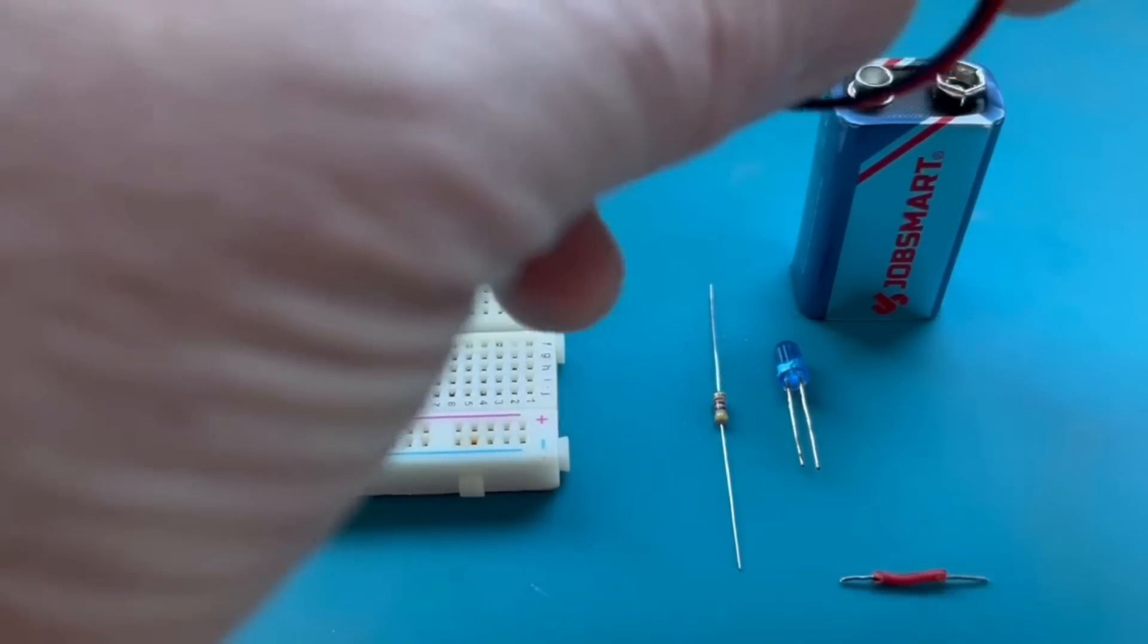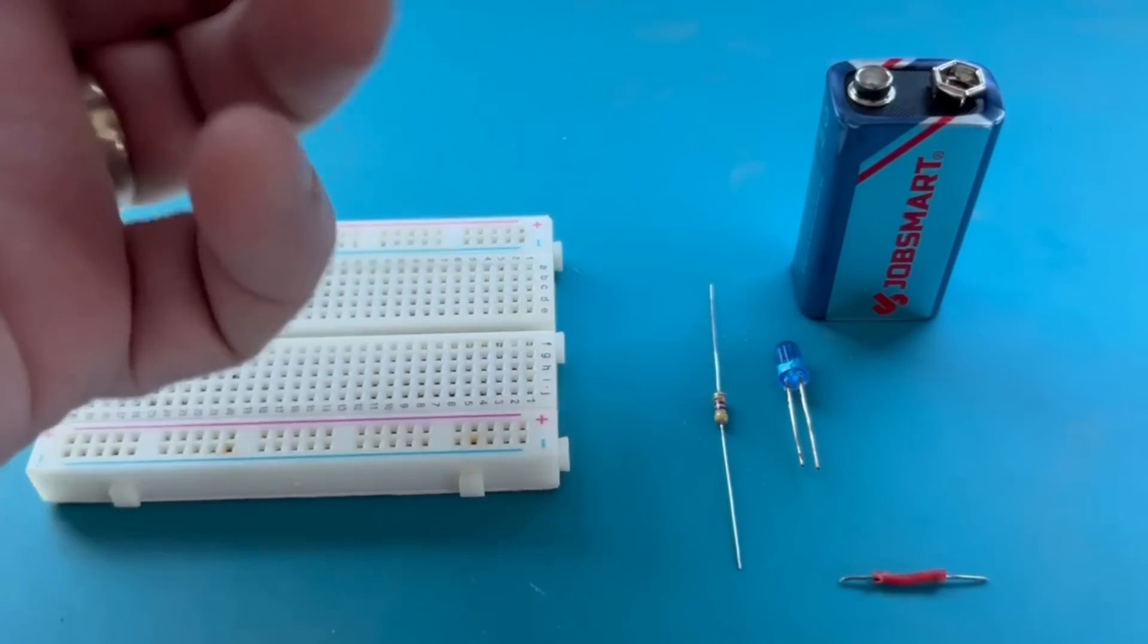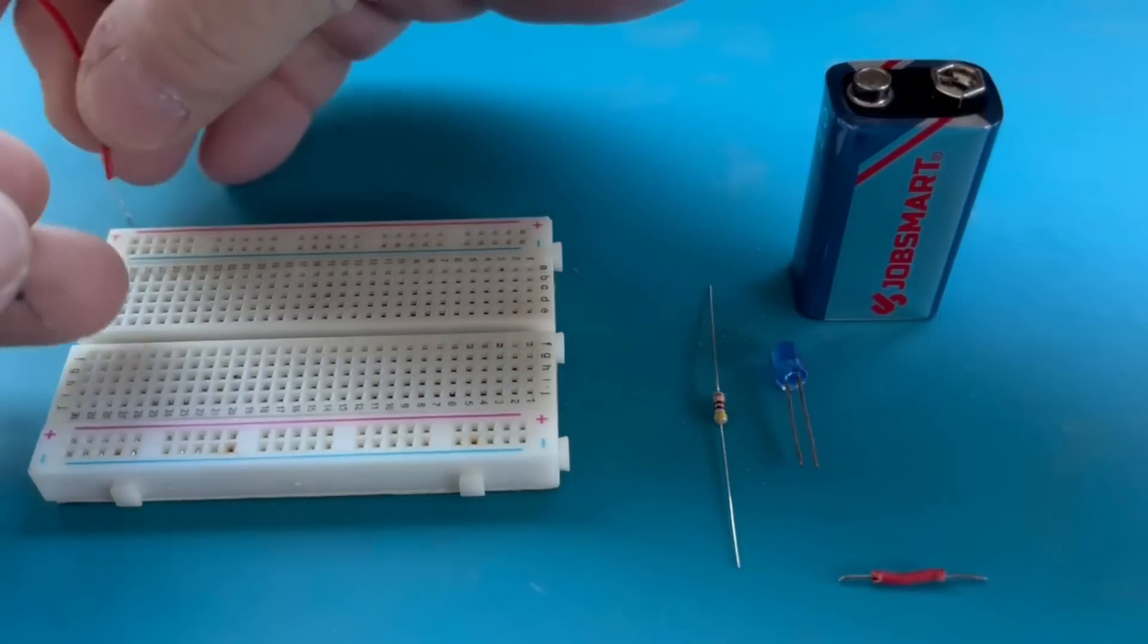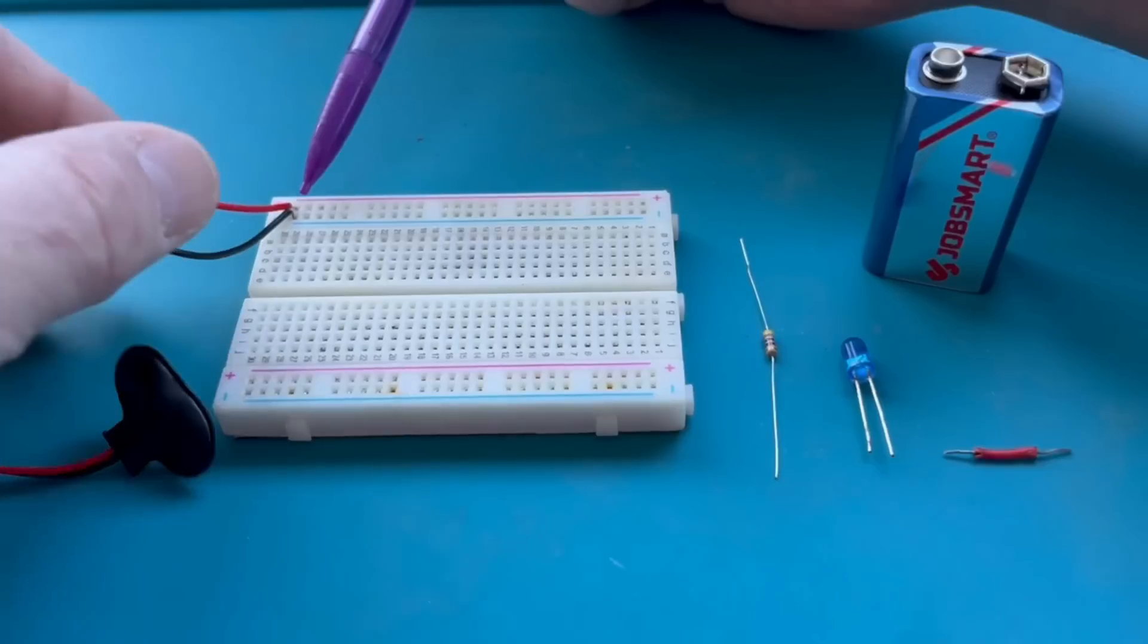We'll start by taking the snap connector and getting it connected to the correct rails. Obviously, we want to put the red wire into the red rail. Okay, now that we've got the 9-volt snap connector in place,